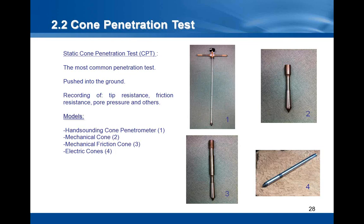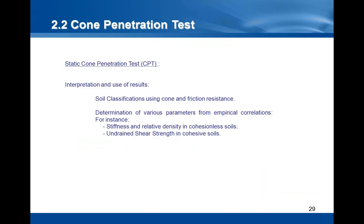At least four models are available: the hand-sounding cone penetrometer, the mechanical cone, the mechanical friction cone, and the electrical cones. Electrical cones are becoming very popular; besides the tip and friction resistance, they can monitor other parameters like pore pressure and accelerations. Static cone penetrometers are used for classification of soils using cone and friction resistance, and for the determination of various parameters obtained from empirical correlations — for instance, stiffness and relative density in cohesionless soils, and undrained shear strength in cohesive soils.